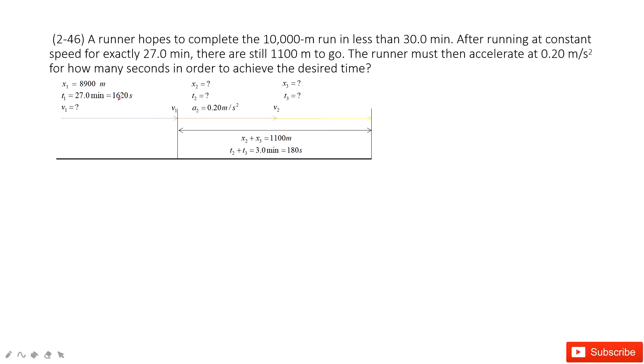In this problem, we can draw a picture to understand what happens. It tells us a runner hopes to complete 10,000 meters in less than 30 minutes. So the total displacement is 10,000 meters, and the total time we expect is just 30 minutes.